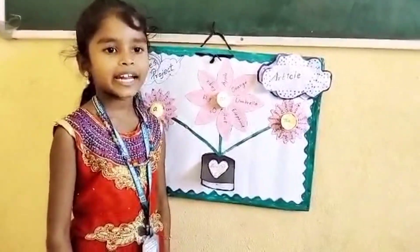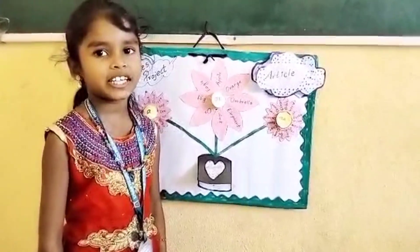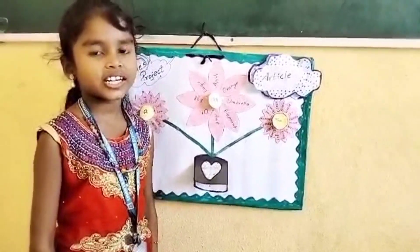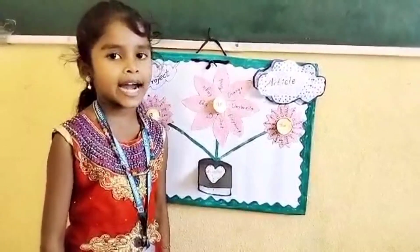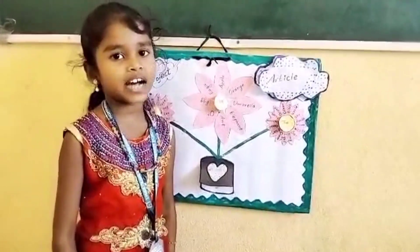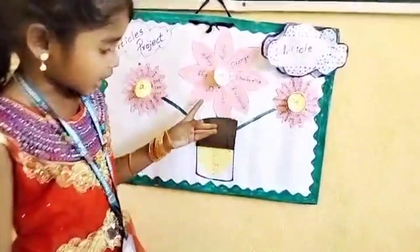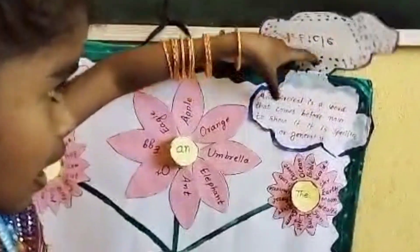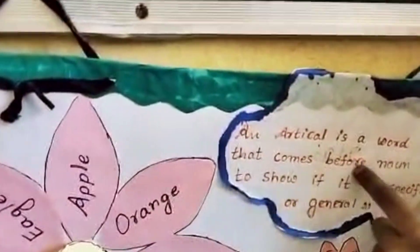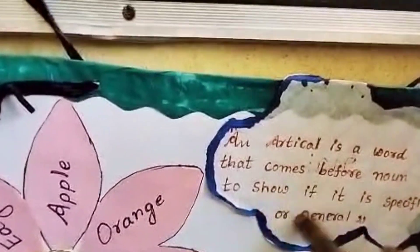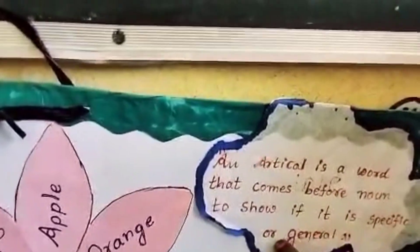Hello friends, my name is Joyce. I am from Strategic First Channel, Shokshan Lily. Today I am here to tell you about an article. How many articles are there? There are three articles: A, An, and The. What is an article? An article is a word that comes before a noun to show if it is specific or general.